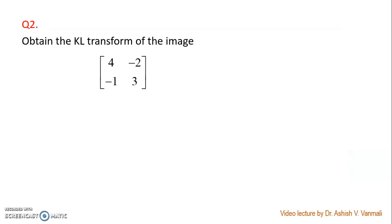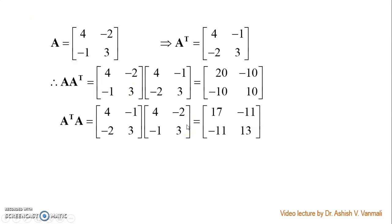So let's consider the second problem now. The question is to find the KL transform of a 2x2 image given over here. The image is: 4, -2, -1, 3. If you observe, the image is not symmetric, so A transpose will be different from A. A transpose is: 4, -1, -2, 3.